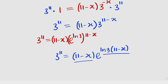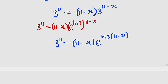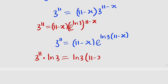The only difference between the left and right sides is the factor of natural log of 3, so we multiply both sides by natural log of 3. The left hand side becomes ln(3) times 3 to the power of 11, which we can also write as 3 to the power of 11 times natural log of 3. The right hand side becomes natural log of 3 times (11 minus x) times e to the power of ln(3) times (11 minus x).